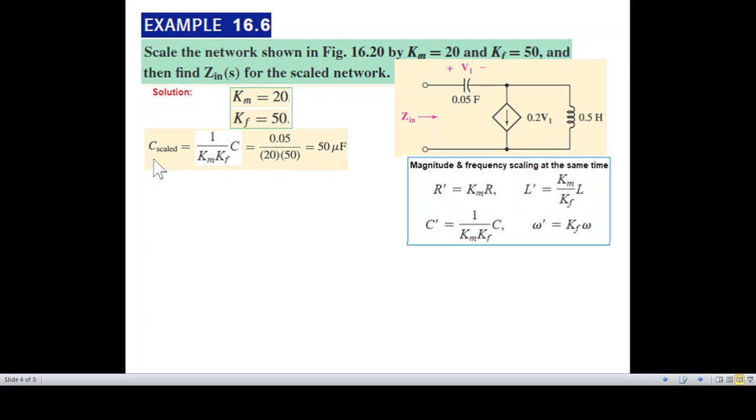So for this capacitor 0.05, we can calculate the scaled value by using this formula. So the new capacitor on the scaled circuit will have 50 microfarad capacitor. Similarly the inductor using this formula will have 200 millihenry inductor.